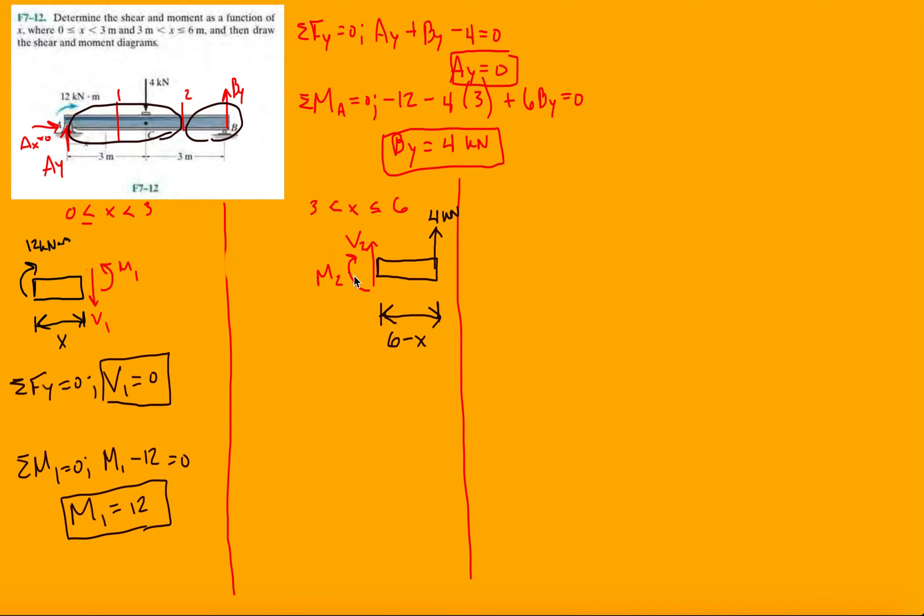Once we're done with this, I would recommend trying it out just looking at the left hand side and matching your results. You should see that you get the same thing, except this one will be less time-consuming. So forces in the Y direction, we have V2 going up plus 4, so we have V2 is minus 4 kilonewtons.